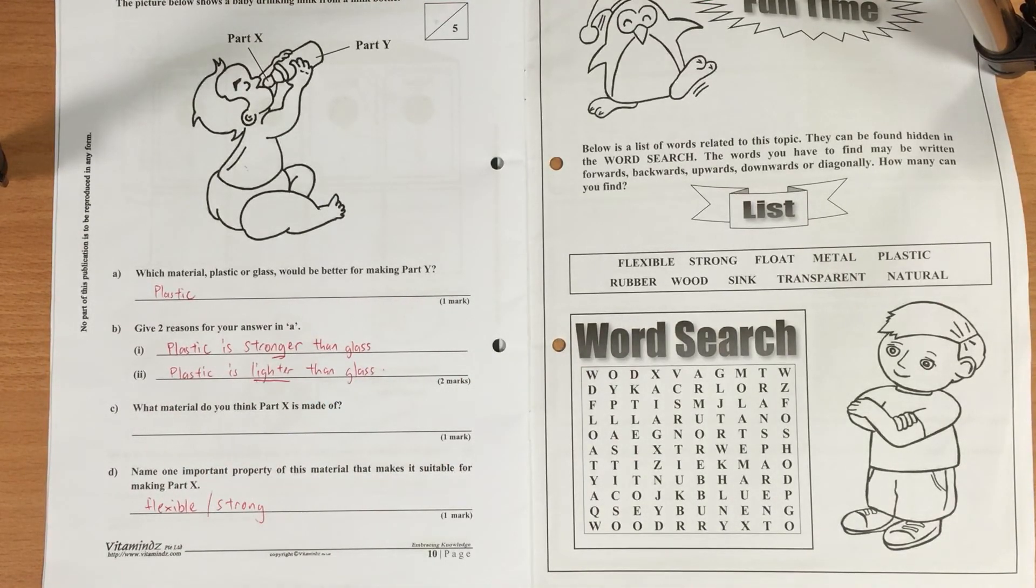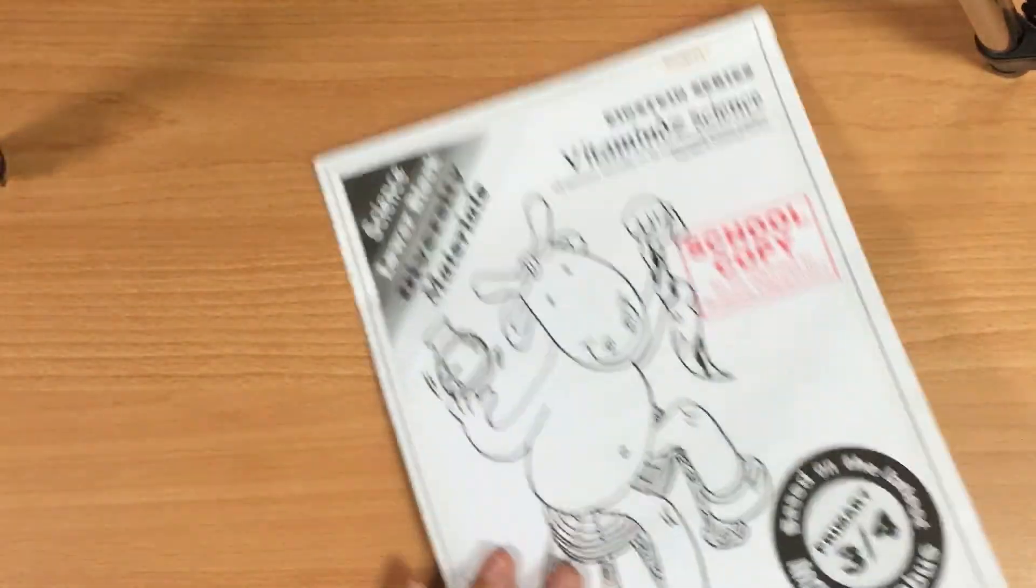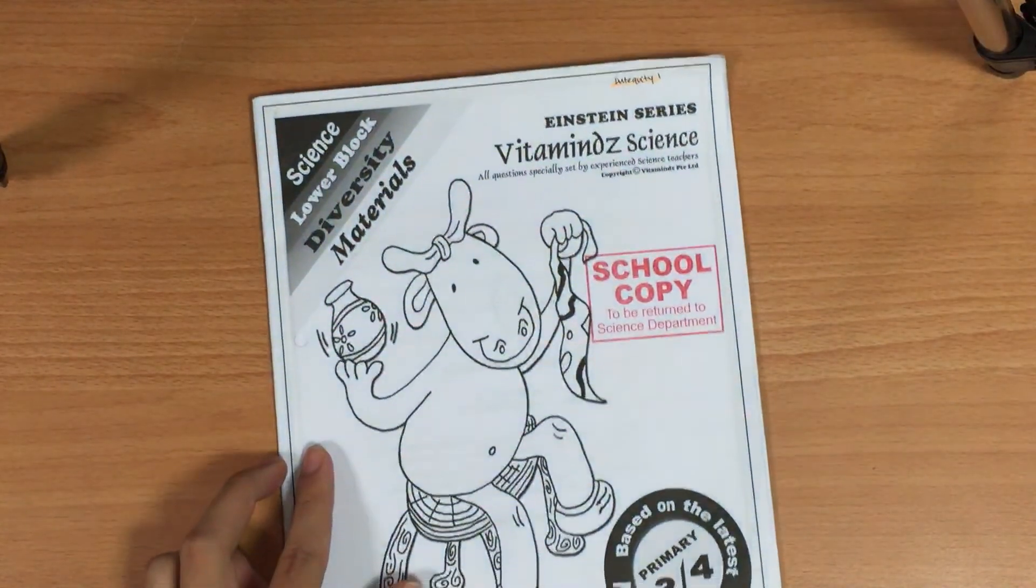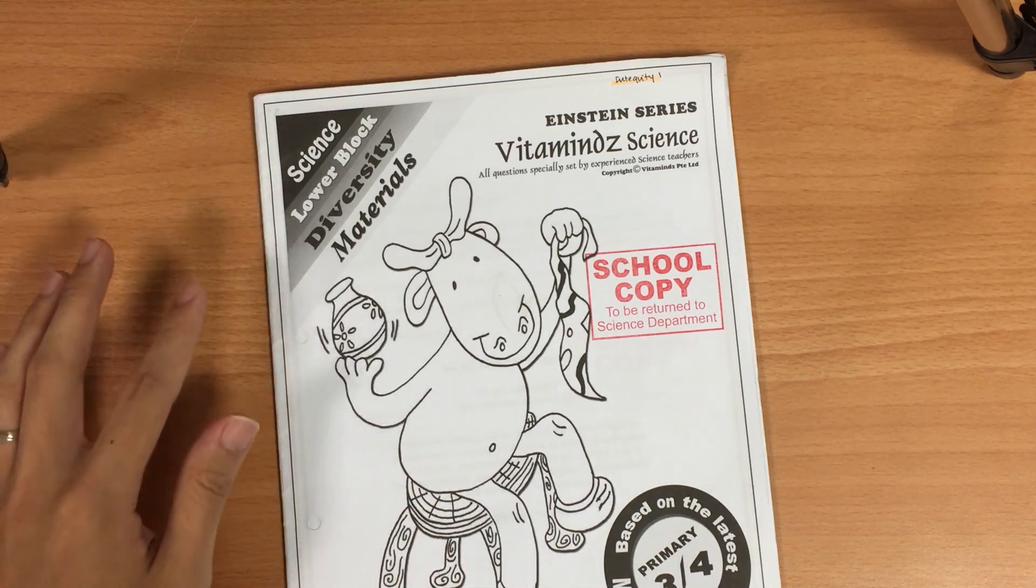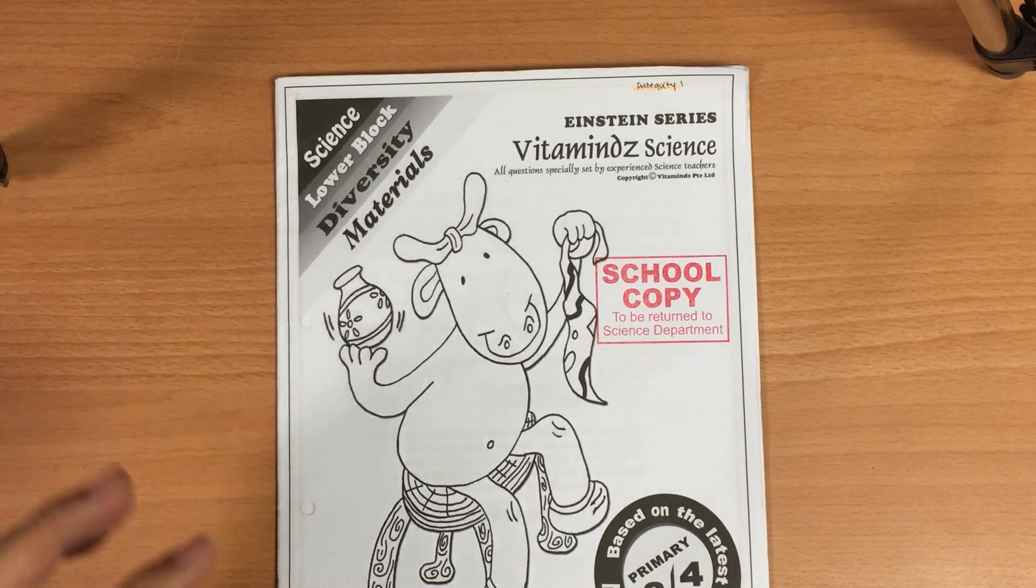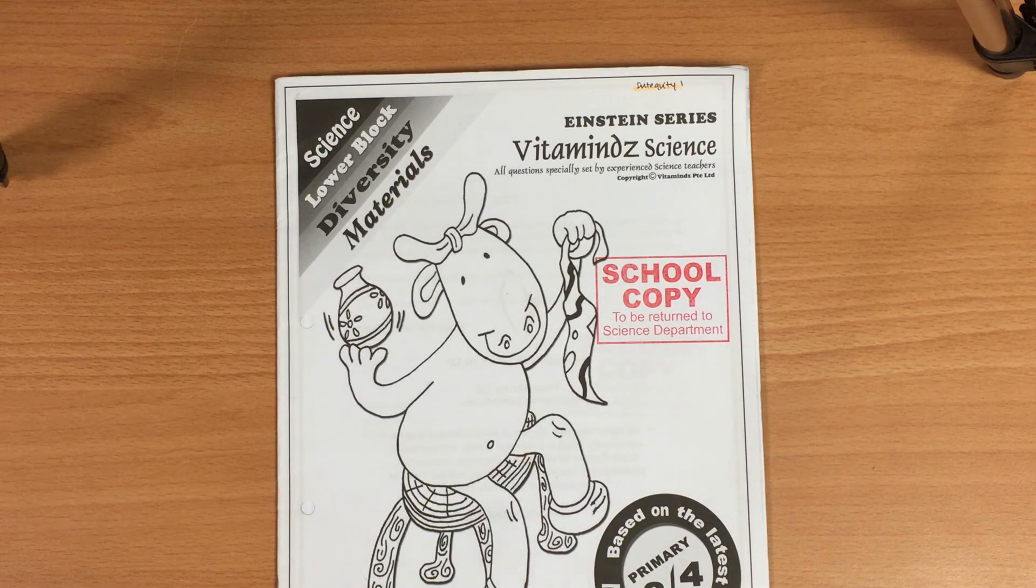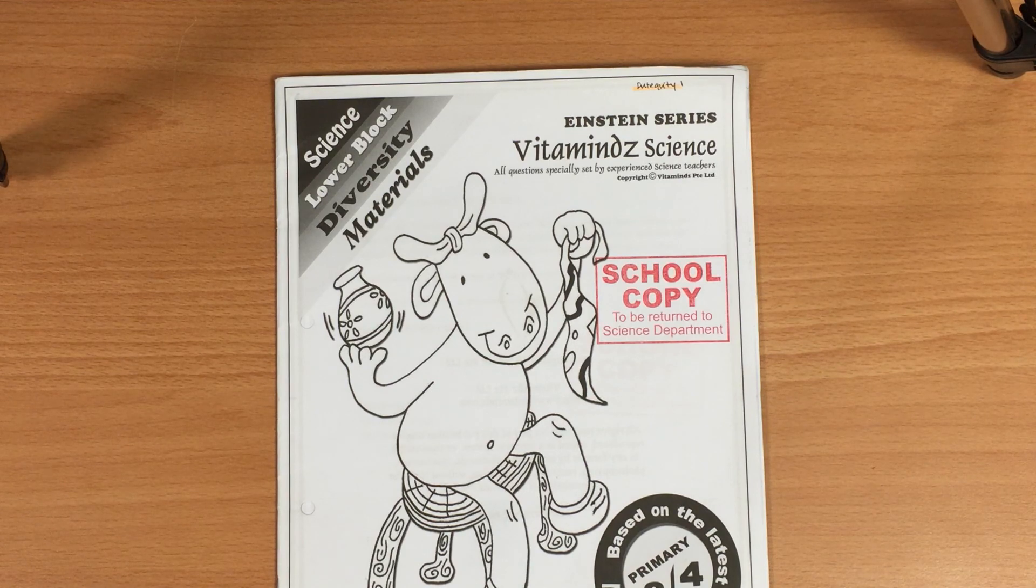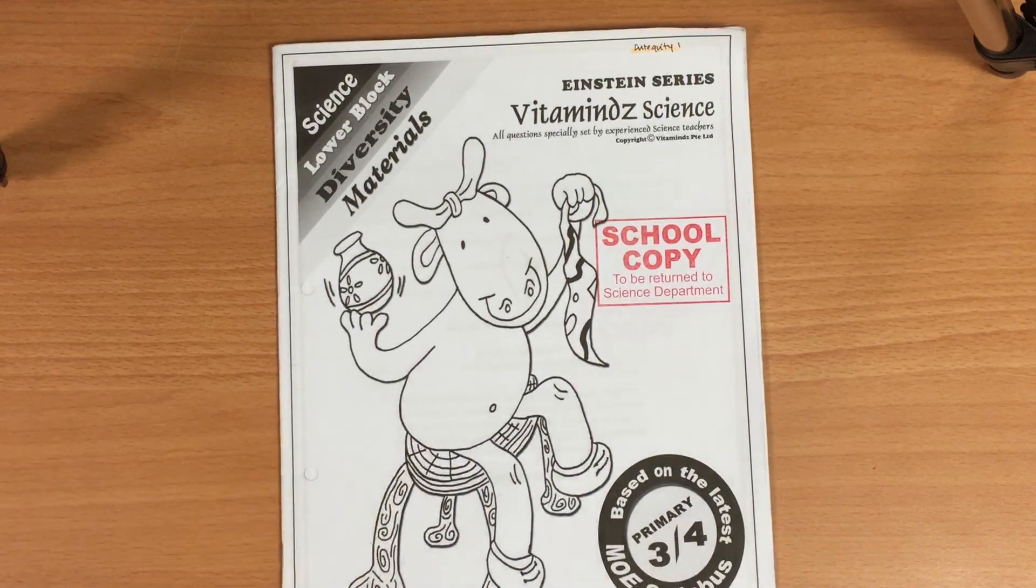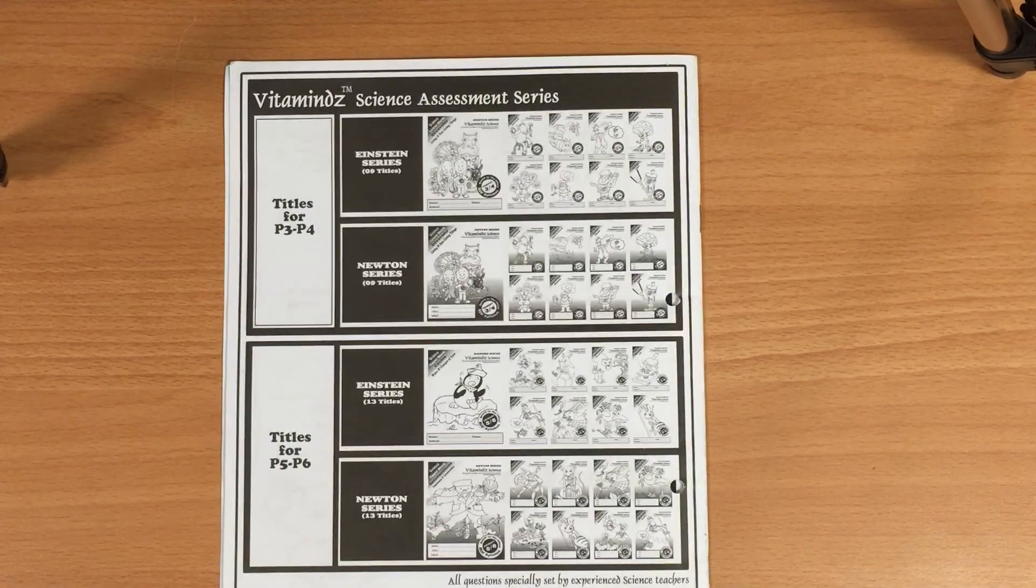So that's all for this topic on materials. Realize that other than materials, we also need to revise on the topic of diversity. Even over the long weekend, if you find that you have a little bit of time, you can start to go and look at the VitaminDz diversity on the living things and non-living things. Go and revise on what the different living things, non-living things, as well as the fungi. Make sure that you know how do they reproduce, whether they're flowering plants or non-flowering plants, and so on and so forth. All right, that's all for this. There's a little video on the VitaminDz materials. See you next time.